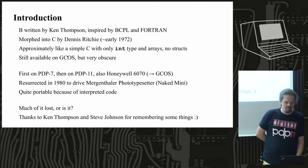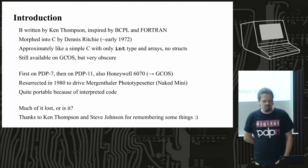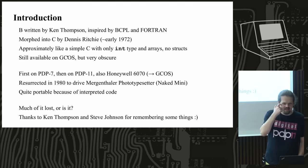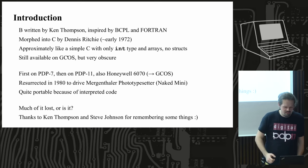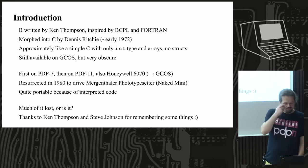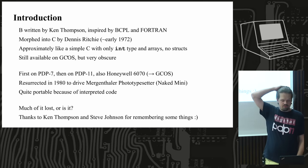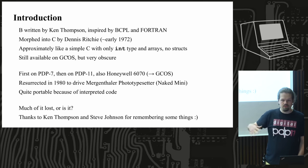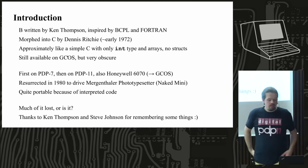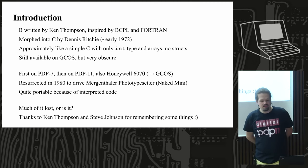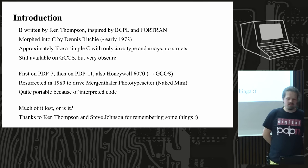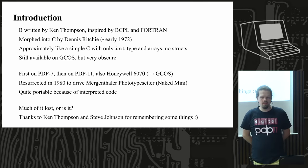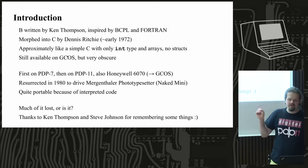B is interestingly still available on the GCOS operating system, though that is quite obscure. I don't think many people have used it or are using it today. The language was first implemented on the PDP-7, then on the PDP-11, and also on a Honeywell machine — a 36-bit machine — which is also where the GCOS connection likely comes from. It was resurrected as late as 1980 to drive a Mergentaler phototypesetter; the computer was the Naked Mini, and there's a very nice paper about that project.